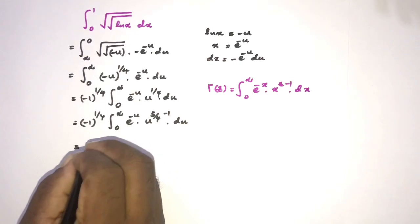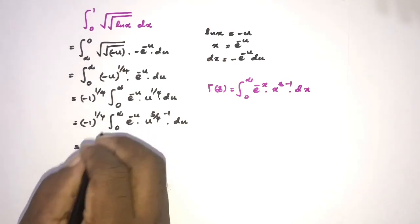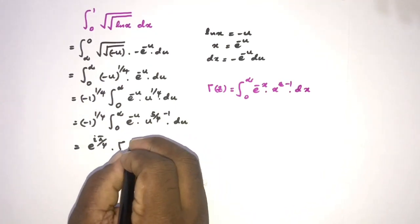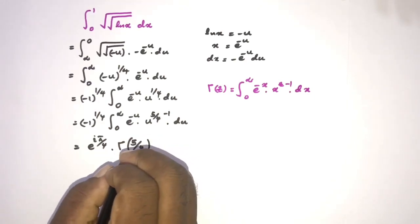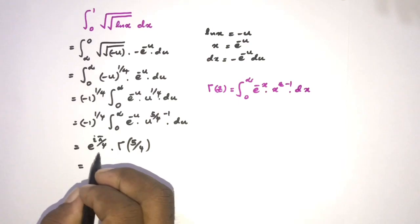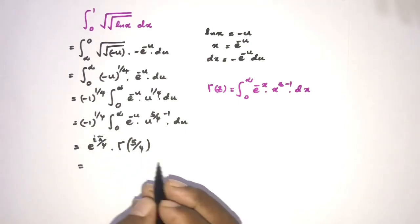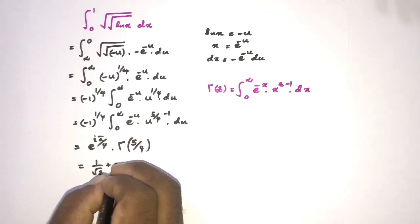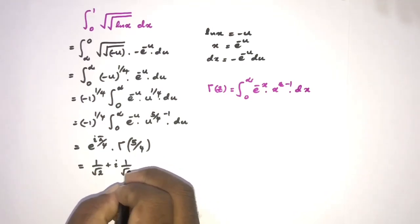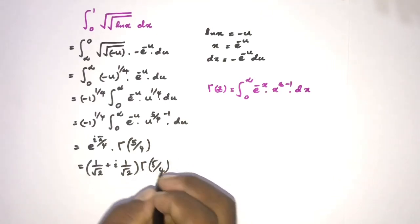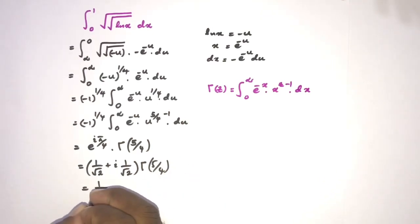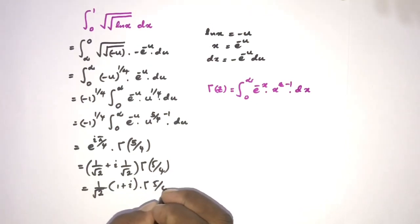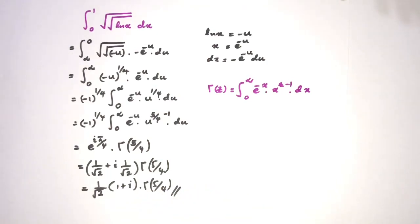Now we apply Euler's formula for the constant minus 1 to the one-over-four: e to the i pi over 4, which equals cosine of pi over 4 plus i sine of pi over 4. Cosine of pi over 4 is 1 over square root of 2, and sine of pi over 4 is also 1 over square root of 2. So the final answer is 1 over square root of 2 times (1 plus i) times gamma of 5 over 4. Thank you for watching.